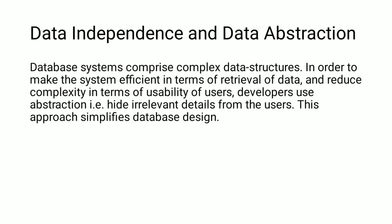There are several levels of abstraction that simplify user interaction with the system: physical level, logical level, and view level. Database systems comprise complex data structures. In order to make the system efficient in terms of retrieval of data and reduce complexity in terms of usability, developers use abstraction — that is, hiding irrelevant details from the user. This approach simplifies the database design.